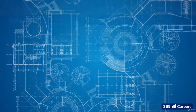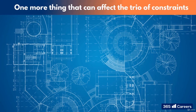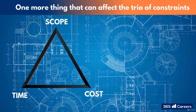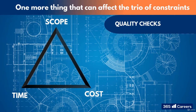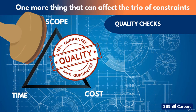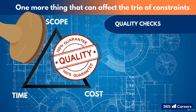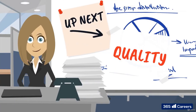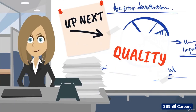Now, there is just one more thing that can affect the trio of constraints — quality checks. Whatever the goal of the project, it must reach quality standards. We're going to look in the next lesson at how the project manager will define these standards and how they are kept throughout the project. I'll see you there.